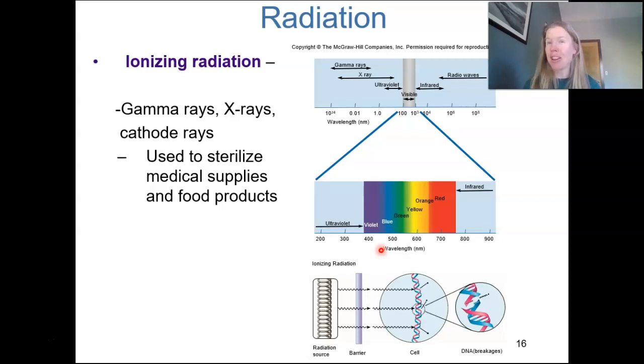So the other half of physical control, another major physical control method is radiation. And what we're looking at here is really the energy emitted from atomic activities, from the atoms that are dispersed at really high velocities through matter in space. And so here we go. Gamma rays, X-rays, cathode rays. These are forms called ionizing radiation. And the idea here is that they're going to lead to mutations in the DNA.